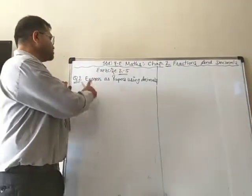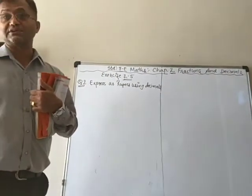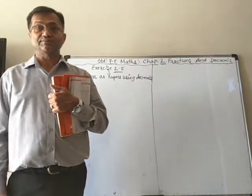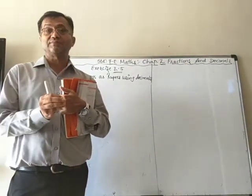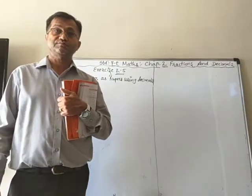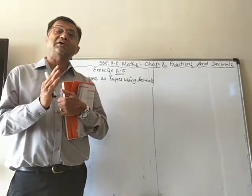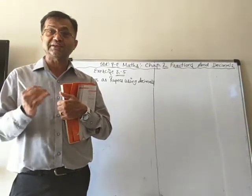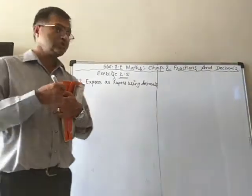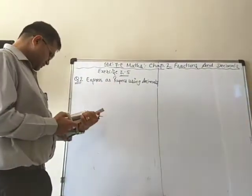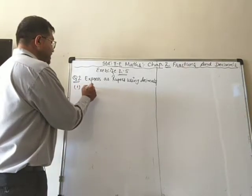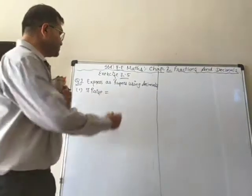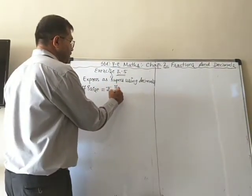Question 2 says to express as rupees using decimals. We know that 1 rupee is 100 paise. When you want to convert paise into rupees, we have to divide that number by 100. The first one is 7 paise — that means rupees 7 upon 100.